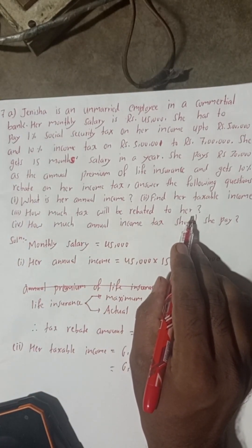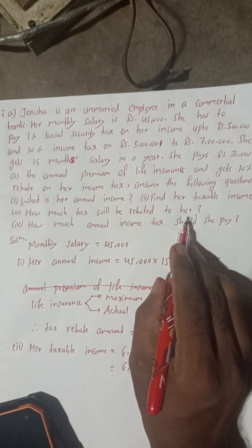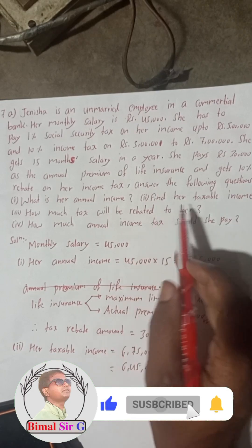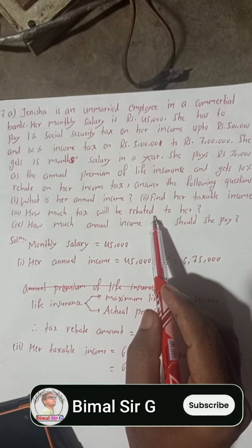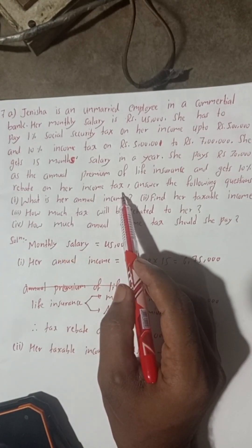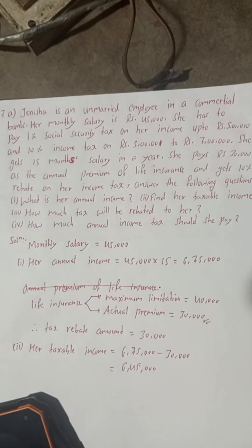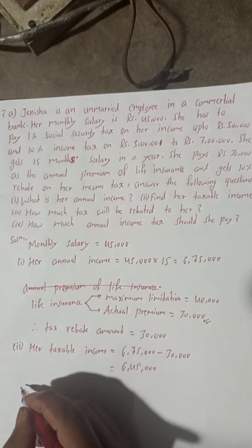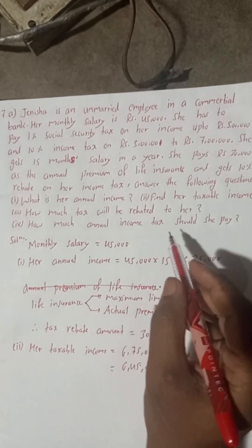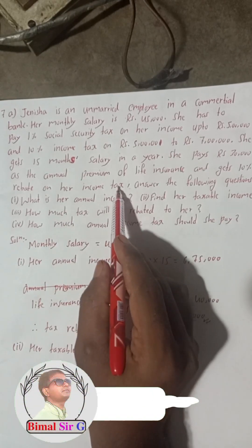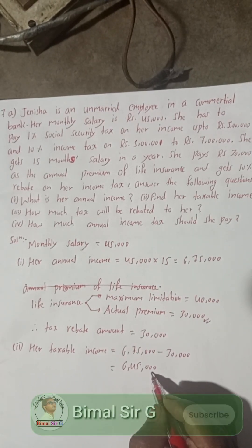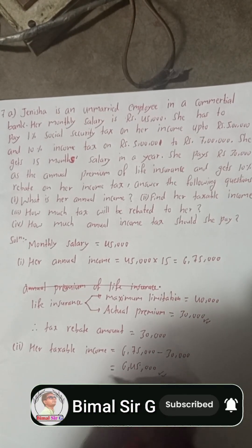Now, how much tax will be rebated to her? She gets 10% rebate on her income tax. So we first need to find the annual income tax. To do that, we split the taxable income into tax slabs: 5 lakhs at 1% social security tax, and the remaining 1,45,000 at 10% income tax.